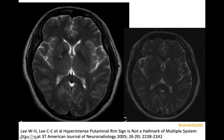Because on 3 Tesla, it might also be a normal finding. This is a healthy volunteer in her 40s on 3 Tesla, and this is the same healthy volunteer on 1.5 Tesla — it might be normal on 3 Tesla. So don't diagnose hyperintense putamenal rim and MSA on 3 Tesla, only on 1.5 Tesla.